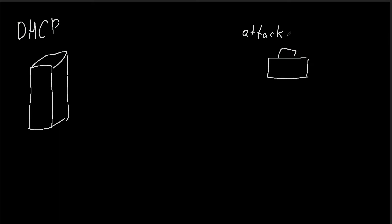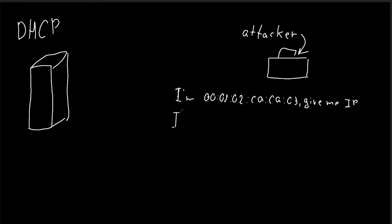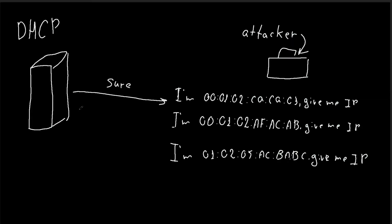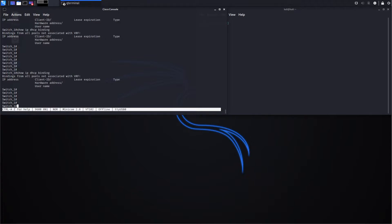The DHCP starvation attack's idea is to exhaust all available IP addresses that the DHCP server can allocate. This attack works because we generate random MAC addresses and send lots of requests for getting an IP address. The DHCP server can't differentiate a real MAC address from a spoofed one and assigns an IP address to each MAC address it receives requests for. As a result, the business stops working because soon or later none of the computers will be able to communicate, because they don't have an IP address.